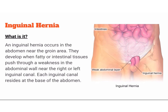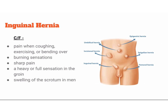Inguinal hernia occurs in the abdomen near the groin area. They develop when fatty or intestinal tissues push through a weakness in the abdominal wall near the right or left inguinal canal. Each inguinal canal resides at the base of the abdomen. The clinical features are pain when coughing, exercising or bending over, burning sensation, sharp pain, a heavy or full sensation in the groin, and swelling of the scrotum in men.